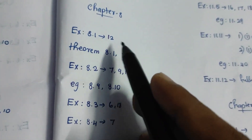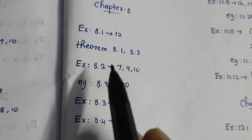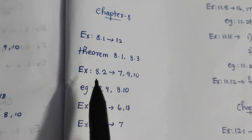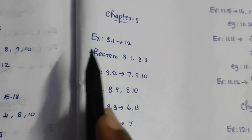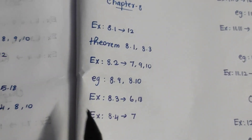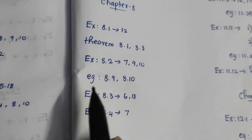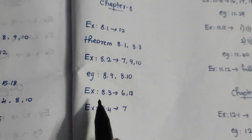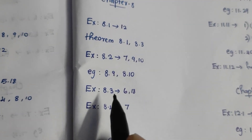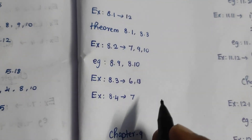Now in Exercise 8.1, it tells you 8.1, 8.3. Exercise 8.2 and 8.9, 10. We have 8.3: 6, which is the 18th sum. Then we have 8.4, which is the 7th sum. So we have the 8th chapter.